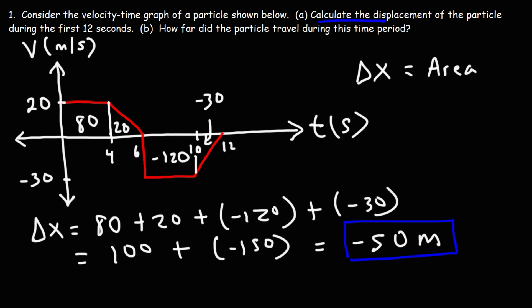That's how we can calculate the displacement. We simply need to break up the graph into rectangles and triangles, calculate the area of each section, including the negative areas, add those values up, and that's going to give us the displacement.